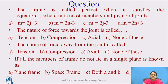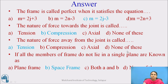Some review questions: Pause the video and try to answer them. The answers are: a frame is called perfect when it satisfies m = 2j − 3; the nature of force towards the joint is compression; and the nature of force away from the joint is tensile force.